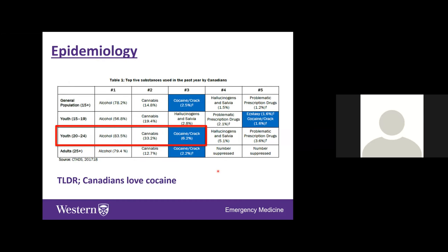Cocaine consistently ranks as the third most popular substance used by Canadians, behind only alcohol and cannabis, which is fairly surprising. This trend holds across most age groups; even in the 15-to-19 group cocaine ranks in the top five, somewhat tied with ecstasy. In the university-age demographic the rate is nearly triple that seen in other age groups. The takeaway: Canadians use cocaine frequently and you're likely to see its effects in the emergency department with consistency.